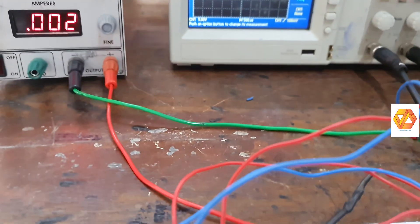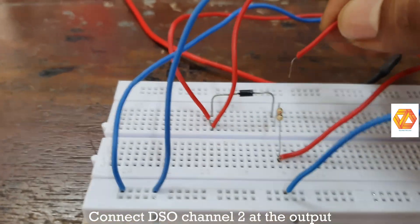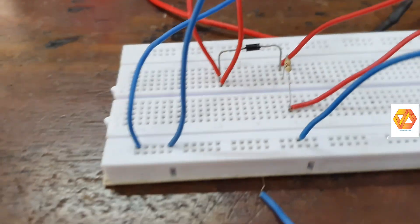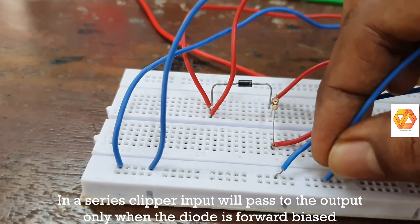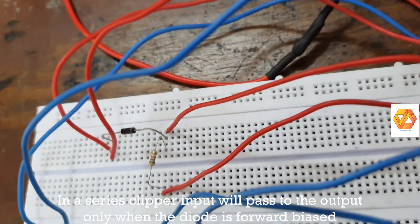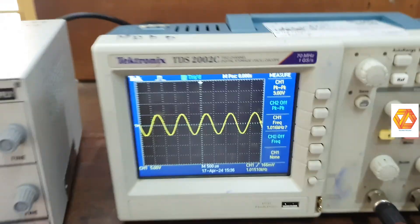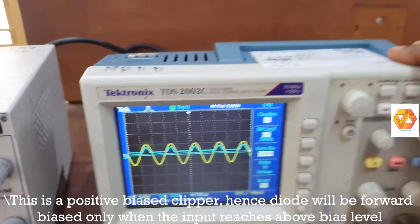Now connect DSO channel 2 at the output. So this is a series clipper. You will get an output only when the diode is in forward biased condition. Now you can see both the input and output. Output is blue.